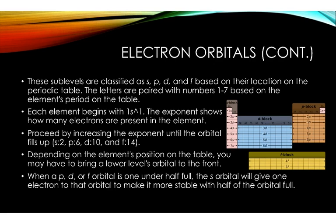When a P, D, or F orbital is one under half full, the S orbital will give one electron to that orbital to make it more stable with half the orbital full. So if I have 4s² 3d⁴, the 3d orbital is very unstable because it's almost half full. And half full is more stable than anything else besides full. So my 4s is going to give to my 3d, I'm going to have 4s¹, which is half full, and 3d⁵, which is also half full.